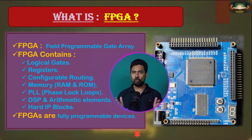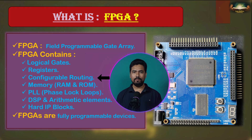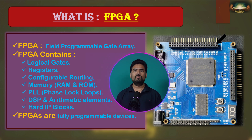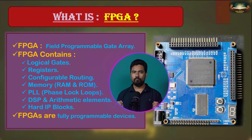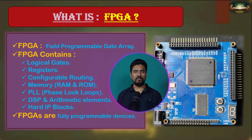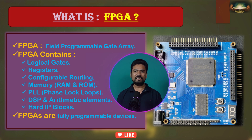Modern FPGAs contain more than just logical gates. There are a few additional elements commonly found in modern FPGAs. Configurable Logic Blocks are the basic building blocks of an FPGA, containing logical gates and flip-flops that can be configured to implement various logical functions. Input-Output Blocks manage the interface between the FPGA and external devices such as sensors or displays. Block RAM, or BRAM, is dedicated memory within the FPGA for storing data. DSP blocks are specialized blocks designed for performing complex mathematical operations quickly. Clock Management Resources help manage and distribute clock signals within the FPGA.